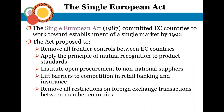In 1987, the Single European Act committed member countries to establish a single European market by 1992. Goals included removing frontier controls between EU countries, applying mutual recognition of product standards and safety requirements, opening procurement to non-national suppliers, lifting trade barriers in banking and insurance, removing all restrictions on foreign trade transactions among members, and abolishing restrictions on cabotage — the right of foreign truckers to pick up and deliver goods within another member state.